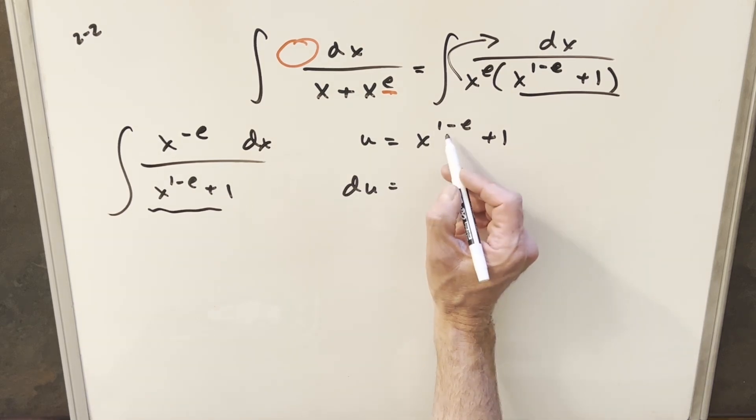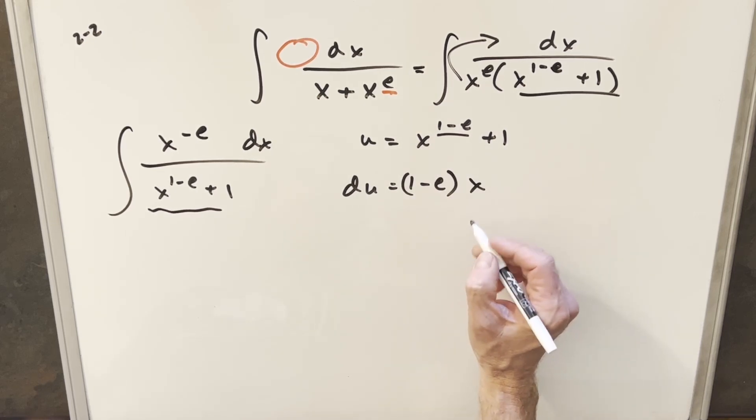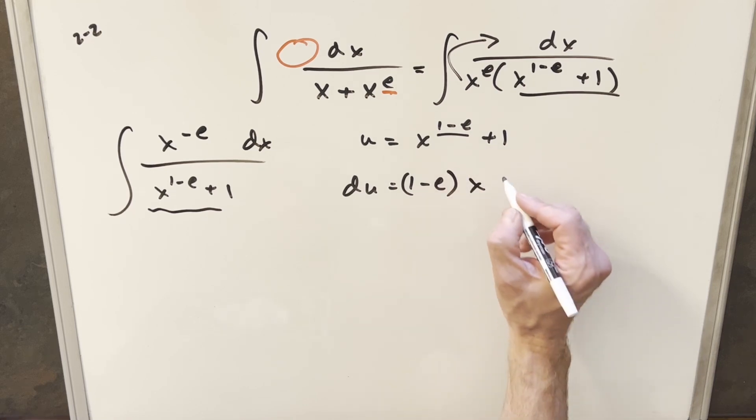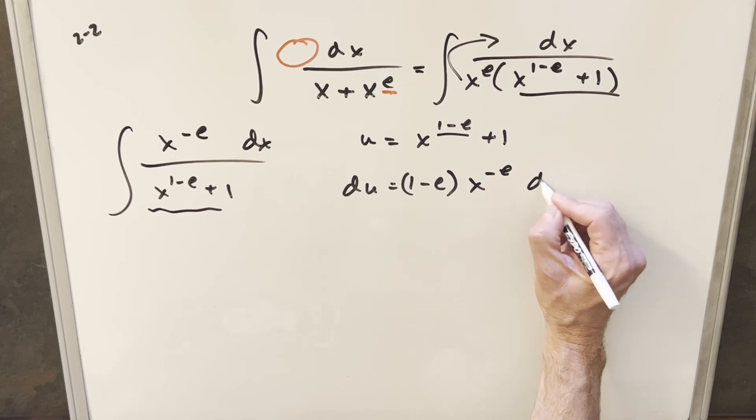And then this is just going to be power rule. Notice that one minus e, this is just going to be a number. So I'm going to use power rule, bring this up front, just parentheses to make it clear. And then we'll subtract one from this. So we're going to have just x to the minus e. Derivative of one is zero dx.